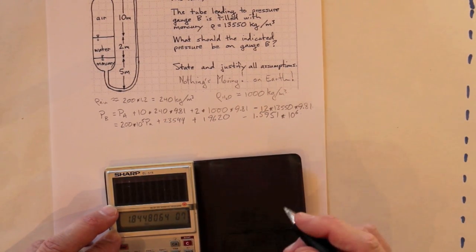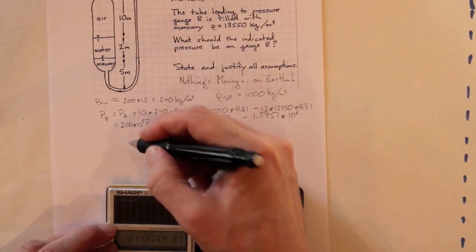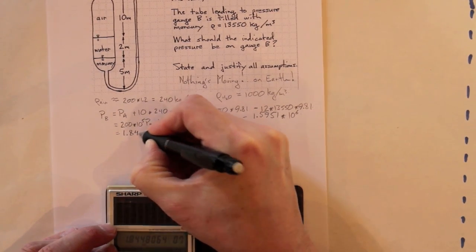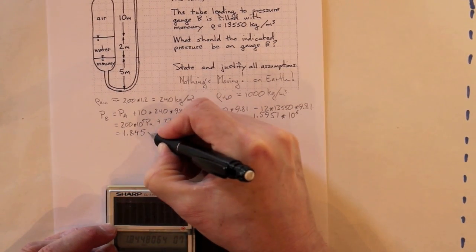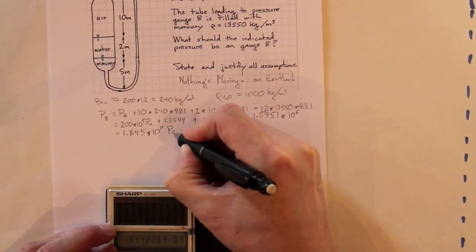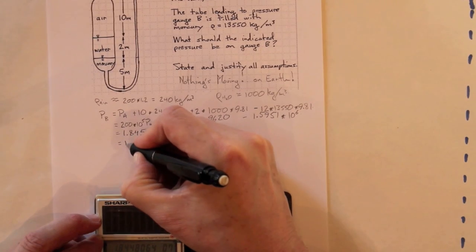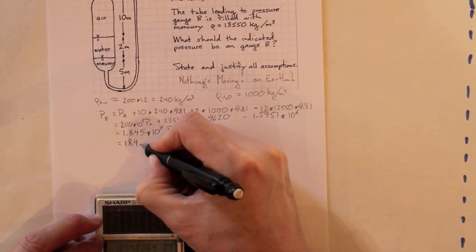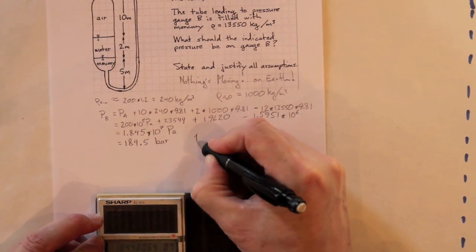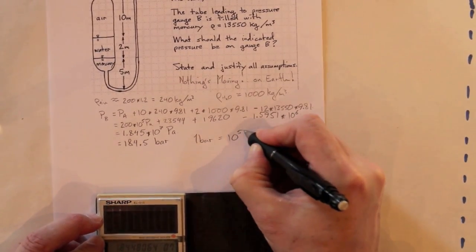So, 1.845 times 10 to the seventh. So, converting that, that's 1.845 times 10 to the fifth Pascals or 184.5 bar since 1 bar equals 10 to the fifth Pascals.